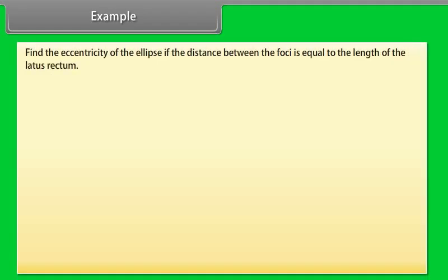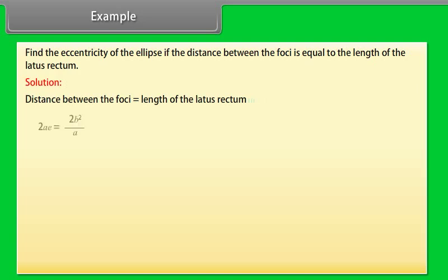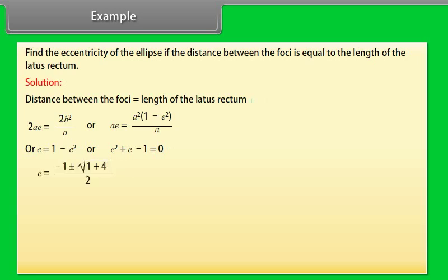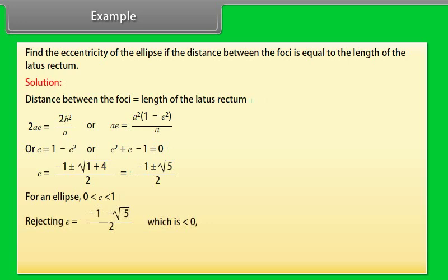Example: Find the eccentricity of the ellipse if the distance between the foci equals the length of the latus rectum. Solution: 2ae = 2b²/a, so ae = a²(1 − e²)/a, giving e = 1 − e². Therefore e² + e − 1 = 0, so e = (−1 ± √5) / 2. Since for an ellipse 0 < e < 1, we reject the negative root and get e = (√5 − 1) / 2.